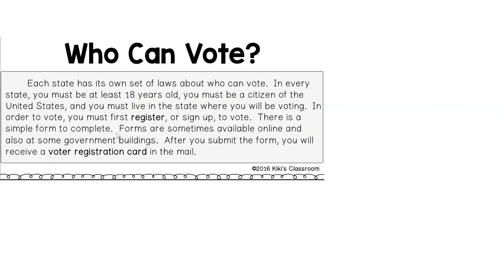Let's dive in a little bit more. Who can vote? Each state has its own set of laws about who can vote. In every state, you must be at least 18 years old, you must be a citizen of the United States, and you must live in the state where you will be voting. In order to vote, you must first register or sign up to vote. There's a simple form to complete — forms are sometimes available online and also at some government buildings. After you submit the form, you will receive a voter registration card in the mail.